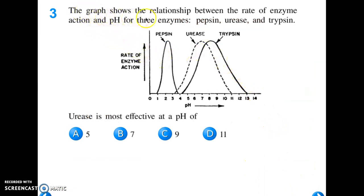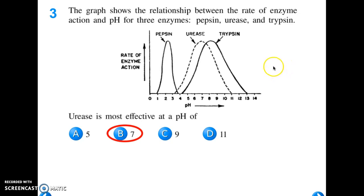Here's the last question. The graph shows the relationship between the rate of enzyme action and pH for three enzymes: pepsin, urease, and trypsin. The graph has pH on the x-axis and rate of enzyme reaction on the y-axis. Urease is most effective at a pH of... The best answer is B, a pH of 7. Notice the line for urease — this is where the enzyme is mostly active. The rate of the reaction is highest right there. If you follow that down, urease is mostly active at a pH of 7. If you go to pH 11, there's zero action because urease doesn't like that pH. If you go down to 3, there's also zero rate of enzyme action.